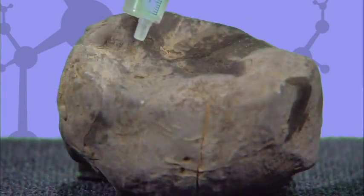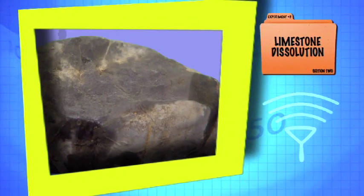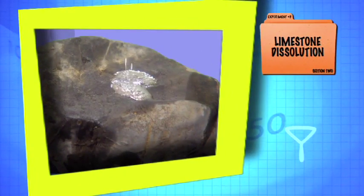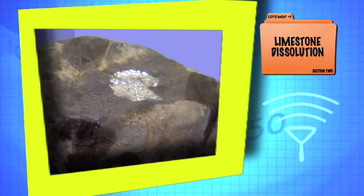When the rainwater hits the ground, it is ever so slightly acidic — just a teensy bit. This is a piece of limestone and this is a small dropper of an acid. Watch. The acid is reacting with the limestone and dissolving it.